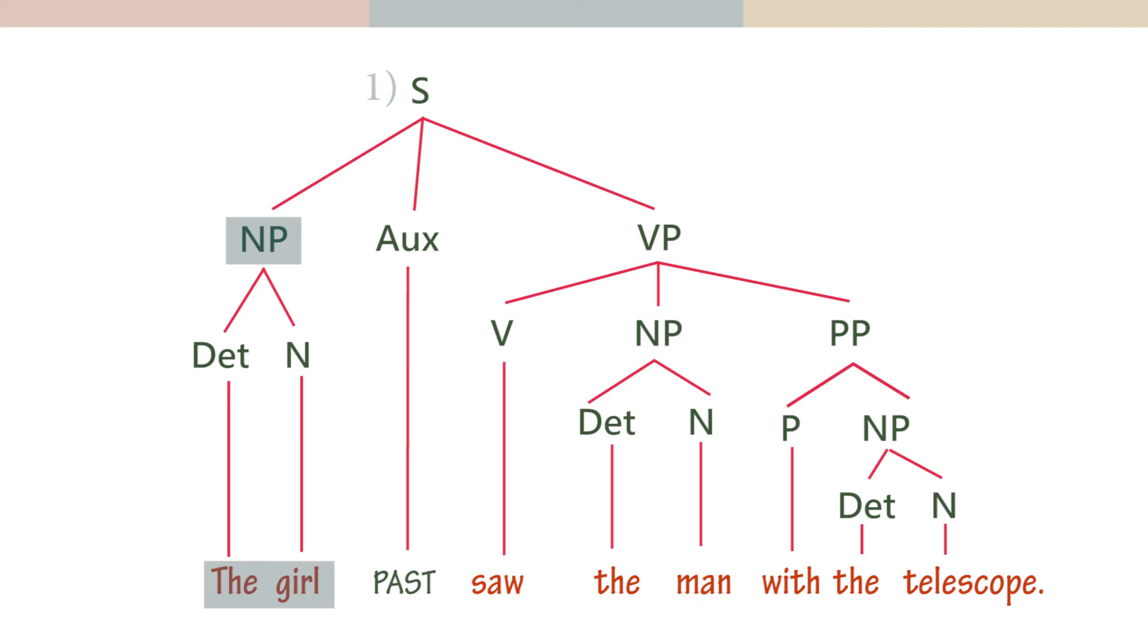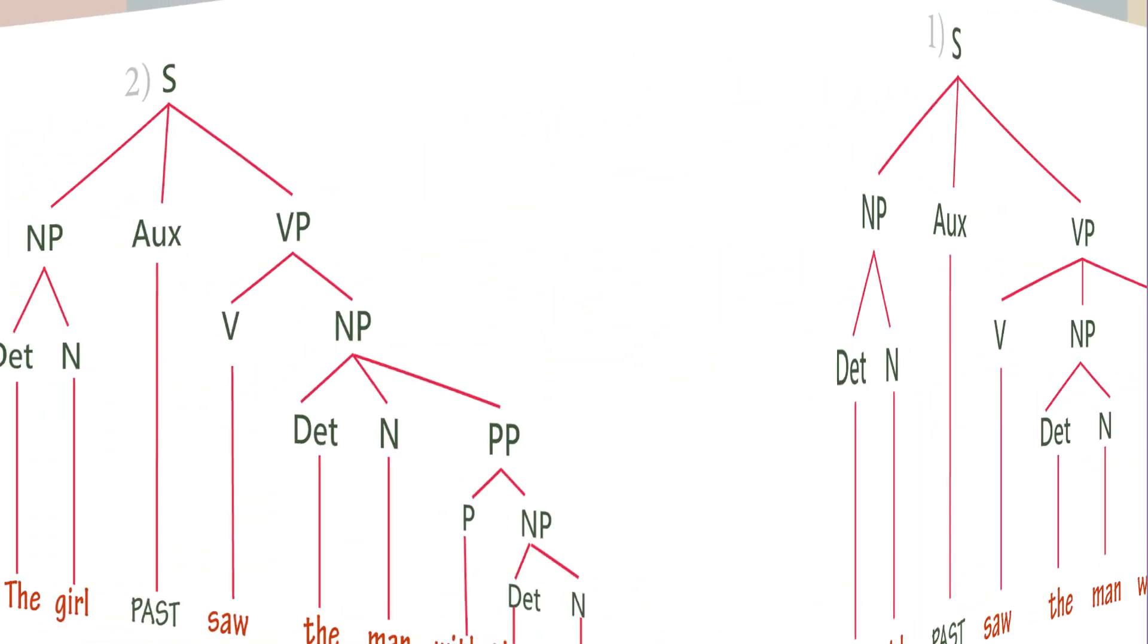The girl doesn't have the telescope directly according to this structure. First, the telescope goes with the verb see, which in this case is past tense saw. It is the act of seeing that happens with the telescope. Then it is the girl who does the act of seeing.